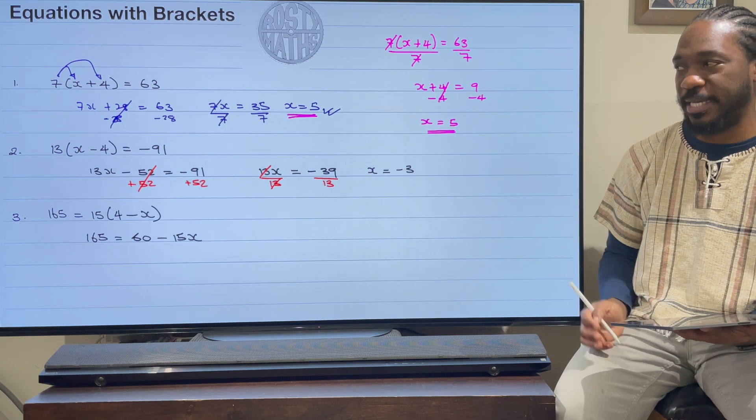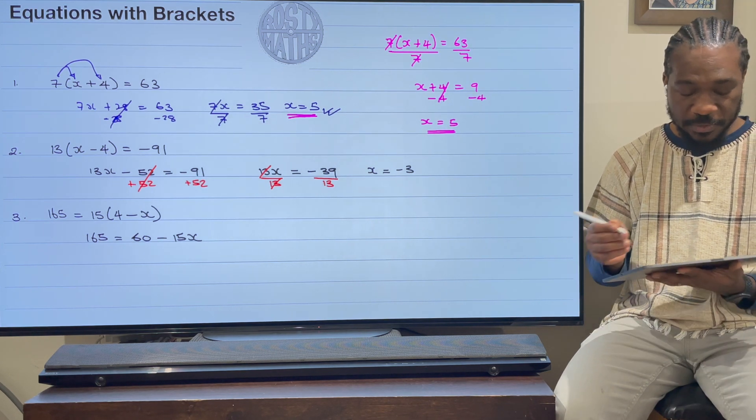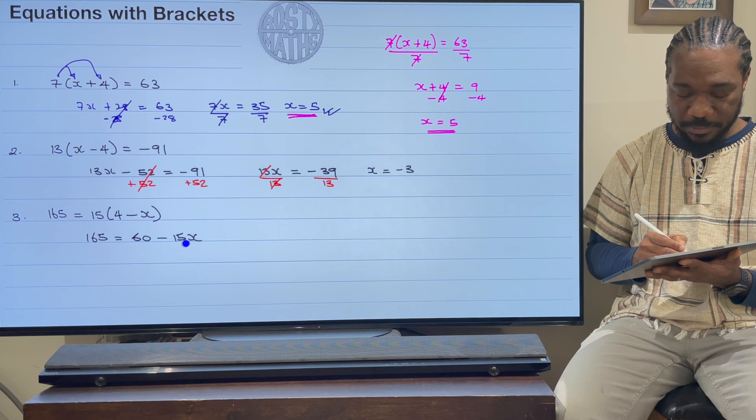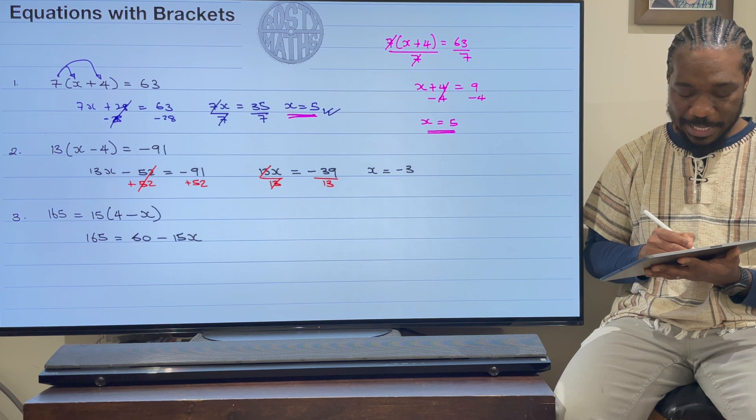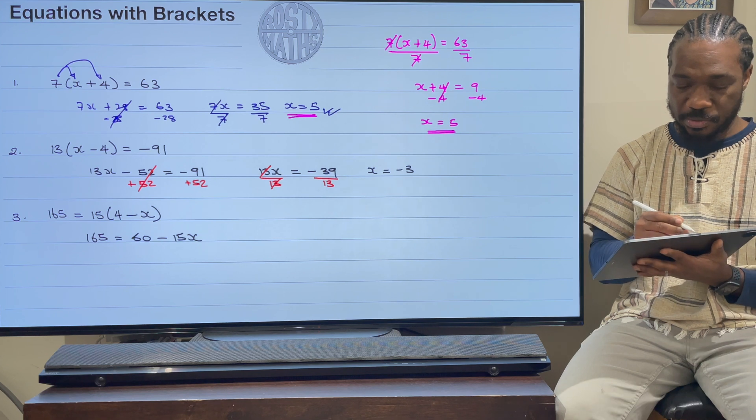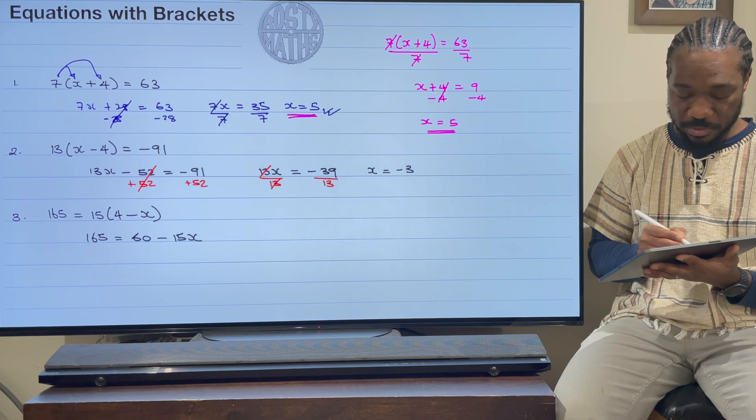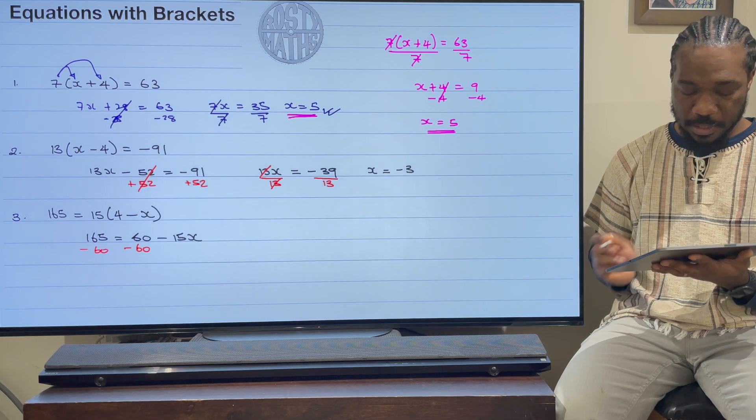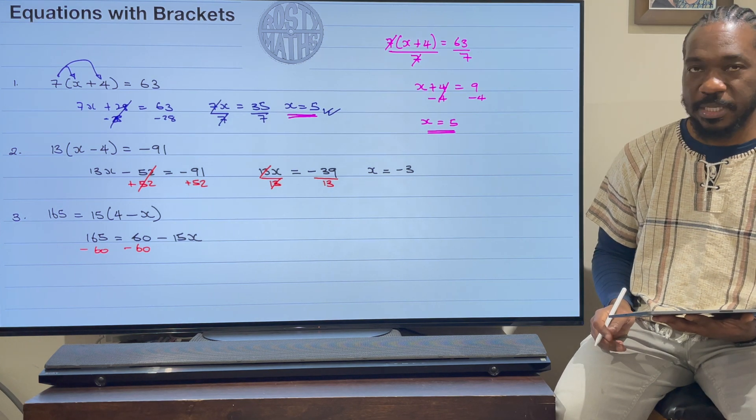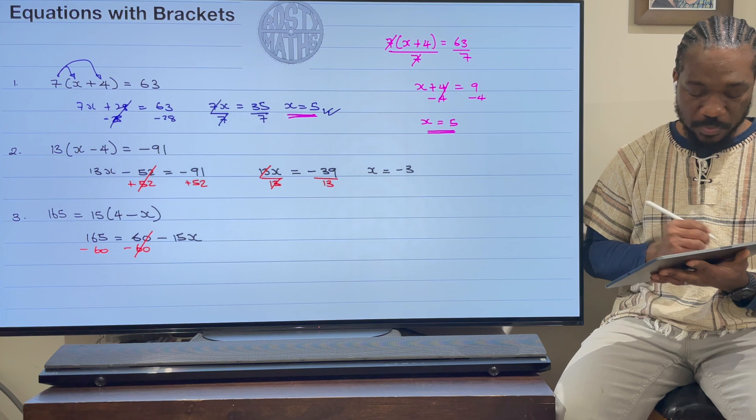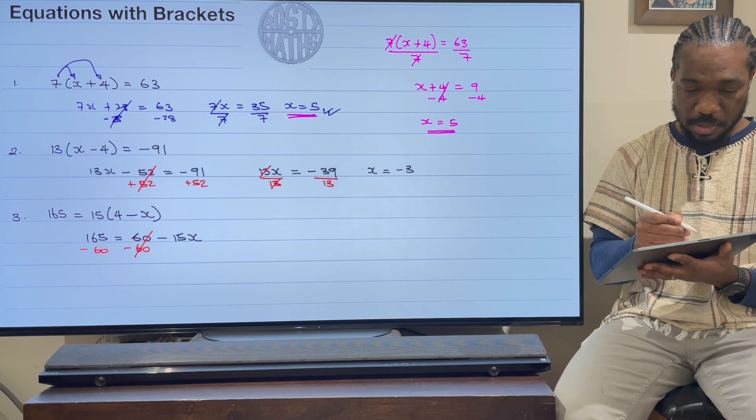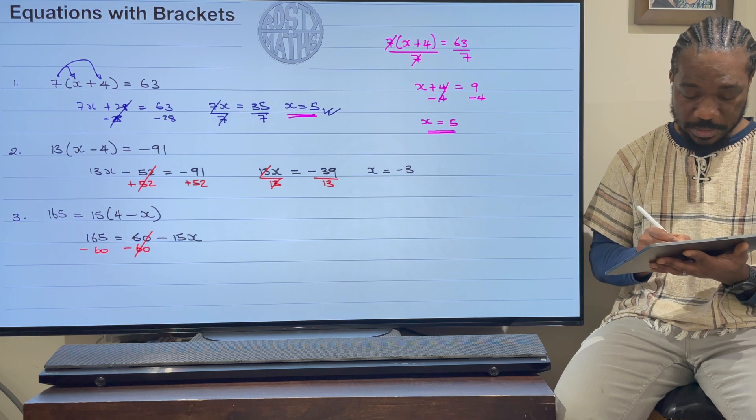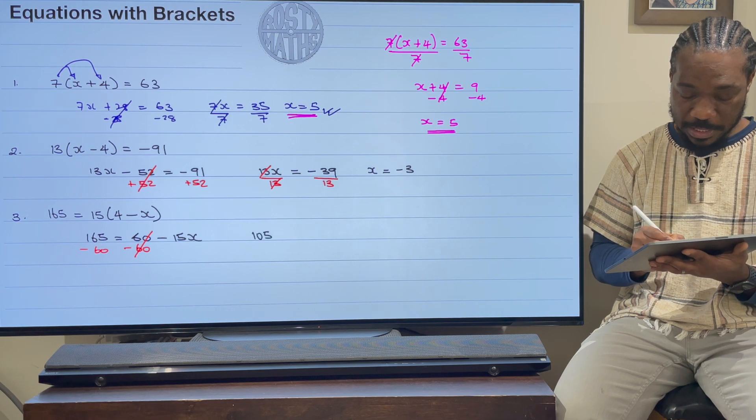All right, so the very first thing that we need to do, we need to realize that x is multiplied by -15, and 60 is added to that. So the first thing I'm going to do is subtract the 60. Subtract it from both sides as we normally do. This will then cancel.